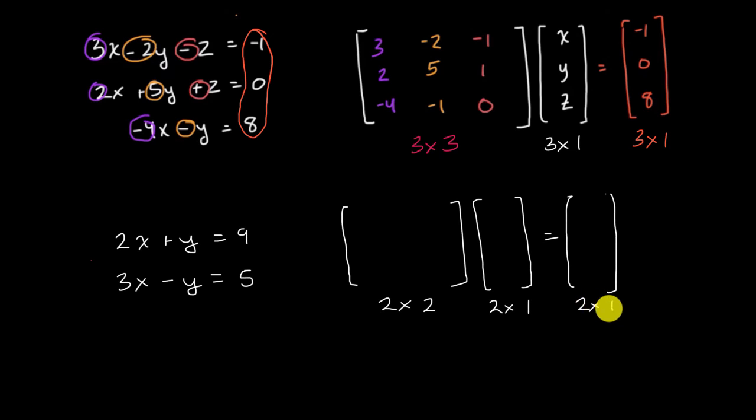And then we can do exactly what we did in that previous example in a previous video, the coefficients on the x terms, two and three. And then we have the coefficients on the y terms. This would be a positive one. And then this would be a negative one. And then we multiply it times the vector of the variables, x, y. And then last but not least, you have this nine and this five over here. Nine and five.